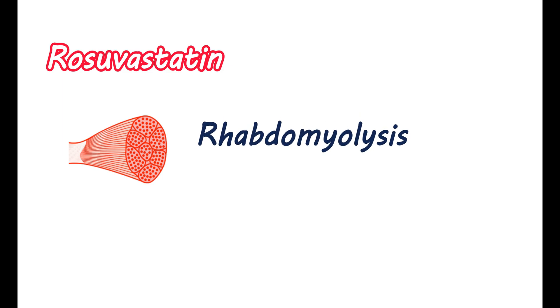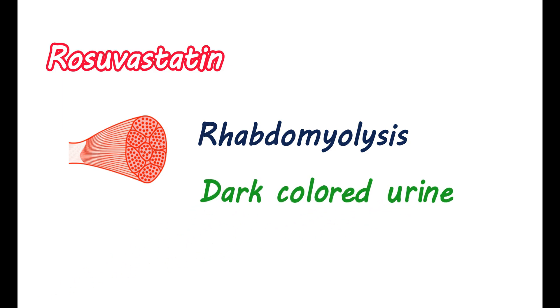Rarely, rosuvastatin can cause a serious condition called rhabdomyolysis. It results in the breakdown of muscle tissue and release of contents into the bloodstream, leading to muscle weakness, stiffness, and pain. You may notice dark-colored urine and decreased urine output. However, at a low dose, this condition is unlikely. It is always better to monitor such symptoms, and if observed, immediately discontinue its use.